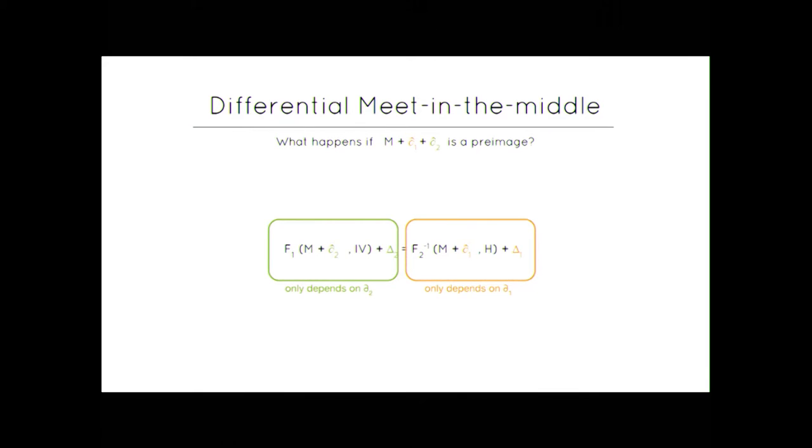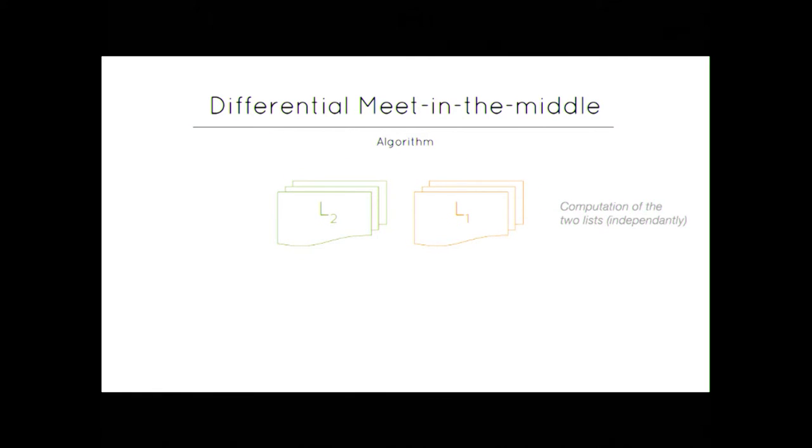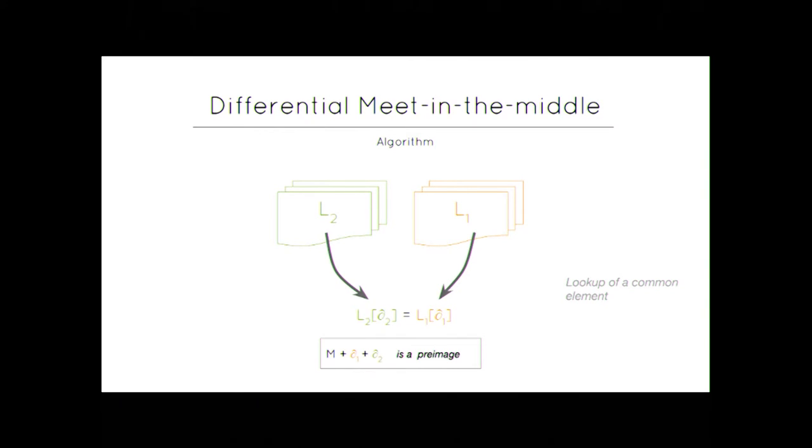So, an idea one can have could be to store them in two lists, L1 and L2, which depends on only one parameter. So, we get now an algorithm to test the presence of a pre-image, which basically is you compute independently the two lists L1 and L2. Then you look up for a common element. If you get it, you're happy because since what we've just said, you will get the fact that M plus delta 1 plus delta 2 is actually a pre-image. If you're not, you're not that happy, but you can say something very interesting is that precisely the affine subspace M plus D1 plus D2 doesn't contain any pre-image.